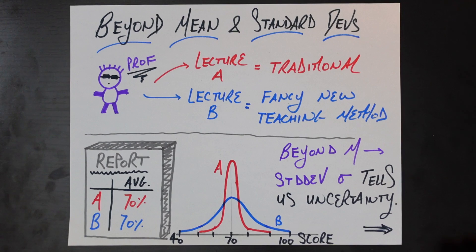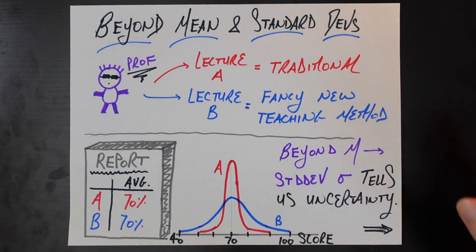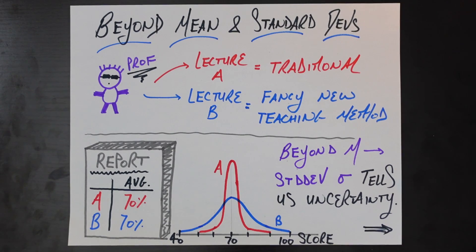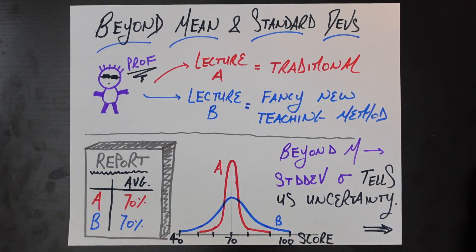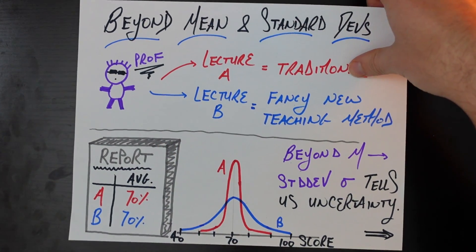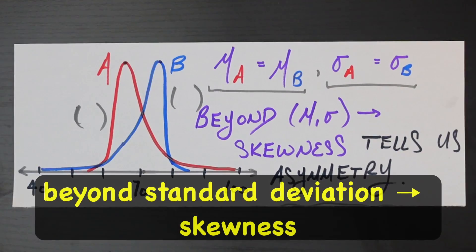And this is where the video starts getting really interesting, because I think even students of statistics will typically stop here. Maybe even in the real world, when you're in a job which requires analytics, you might say here's the average of my metric and here's the standard deviation of my metric, and that's the end of the story. Let's go one step further — let's talk about skewness.